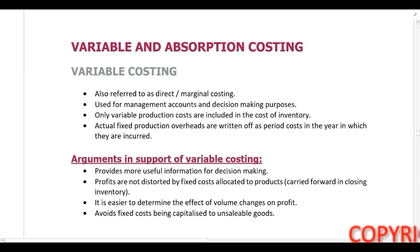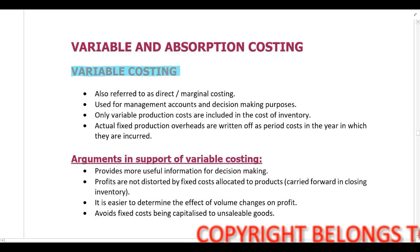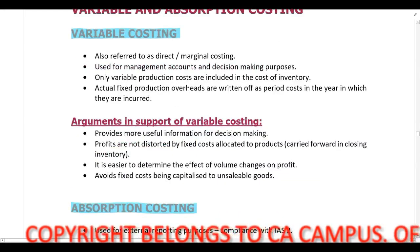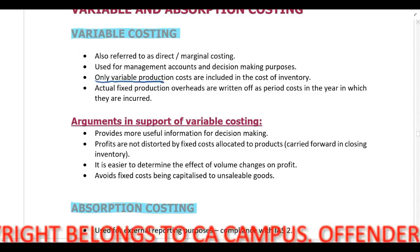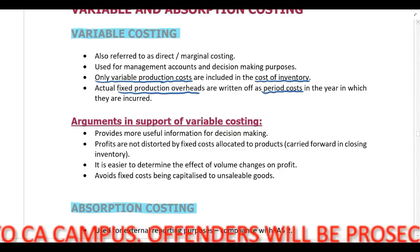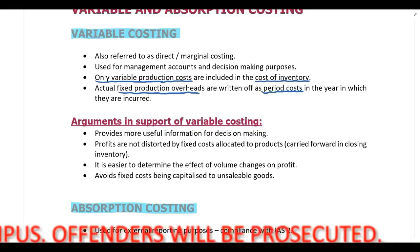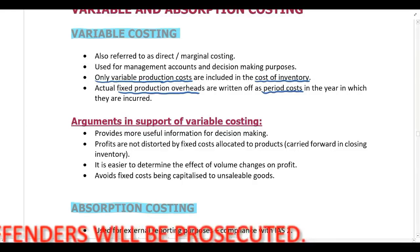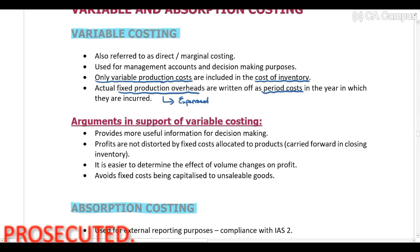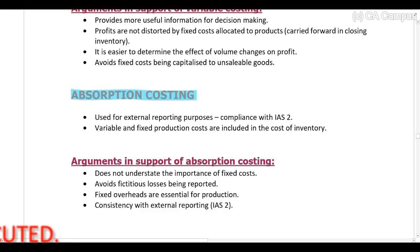Next we need to look at variable and absorption costing. When preparing your statement of profit and loss and other comprehensive income, you can either use variable costing or absorption costing. With variable costing, we only include variable production costs in the cost of inventory, and fixed production costs are written off as period costs in the year incurred. With absorption costing, both variable and fixed production costs are included in the cost of inventory.